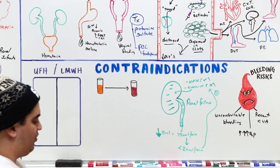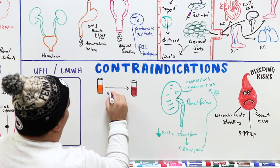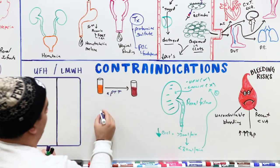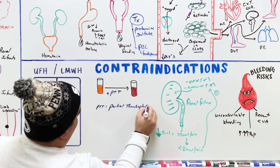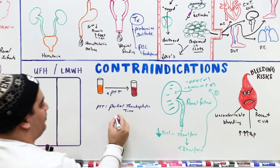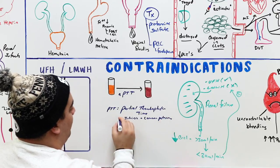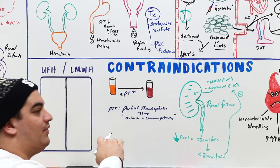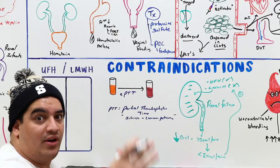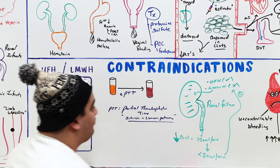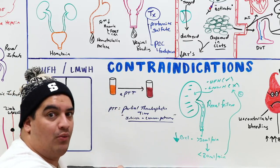The PTT, or activated partial thromboplastin time (APTT), is the time it takes for the intrinsic and common pathway to occur — from factor 12 activating factor 11, to factor 9, combining with 8, activating factor 10, converting prothrombin into thrombin, activating fibrinogen into fibrin, and forming a clot. The APTT tends to be longer than the PT, which measures the extrinsic pathway and common pathway.